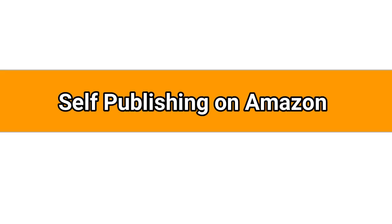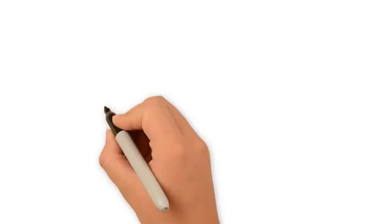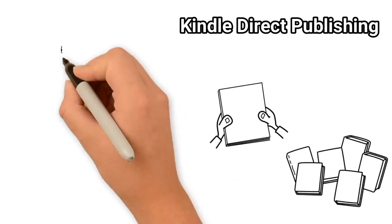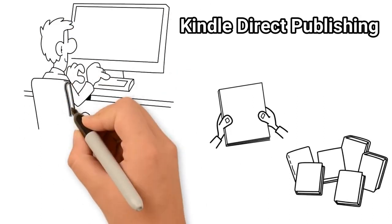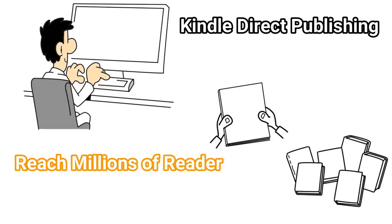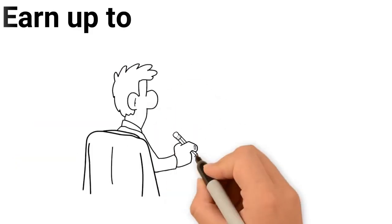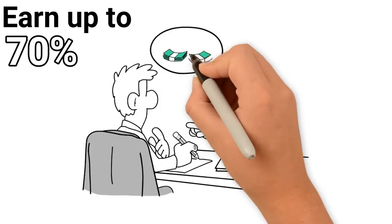Self-publishing on Amazon. Self-publishing paperbacks and ebooks with Kindle Direct Publishing is fast and free. Your book could reach millions of readers on Amazon and Kindle stores worldwide in 24 hours. You can earn up to 70% royalties for each book sold.